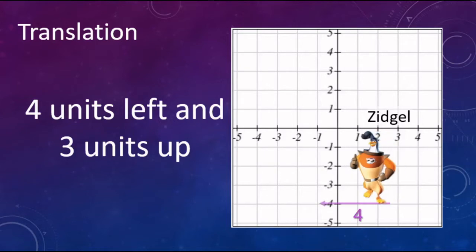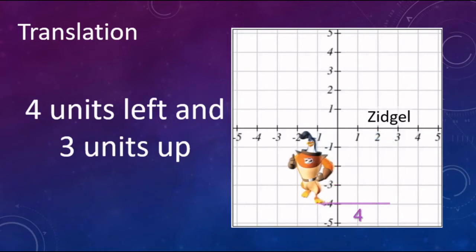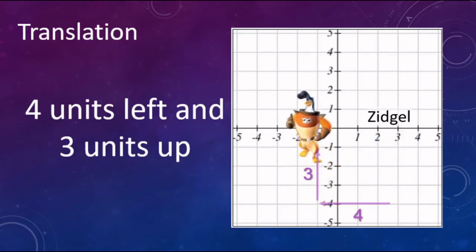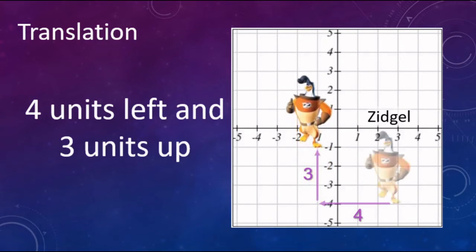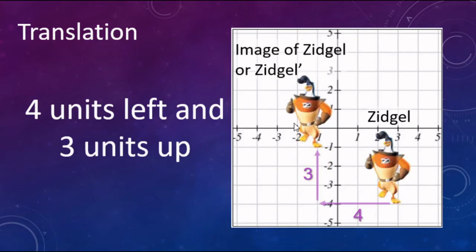So four to the left — one, two, three, four — and then three up — one, two, three. And the new one is called the image of Zijil. After the translation, Zijil prime would be another way of saying it. Here's our original, there's the image.